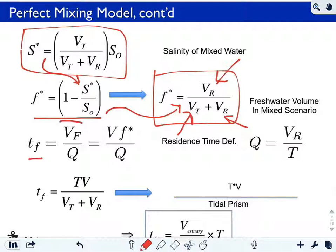Now back to my flushing time, T flushing, it's the ratio of the volume of fresh water in the estuary divided by the river discharge rate, meters cubed per second, which we're expressing as the total volume of the estuary times the fresh water fraction divided by the fresh water rate.